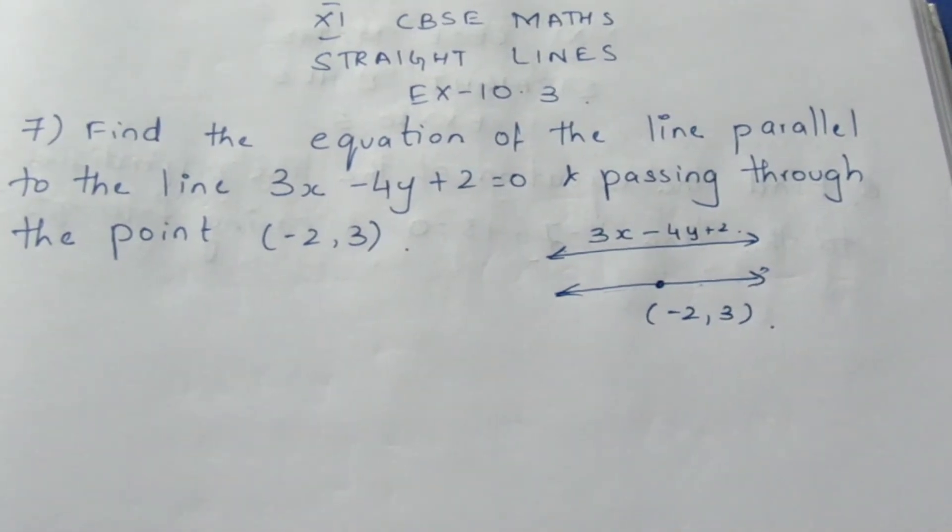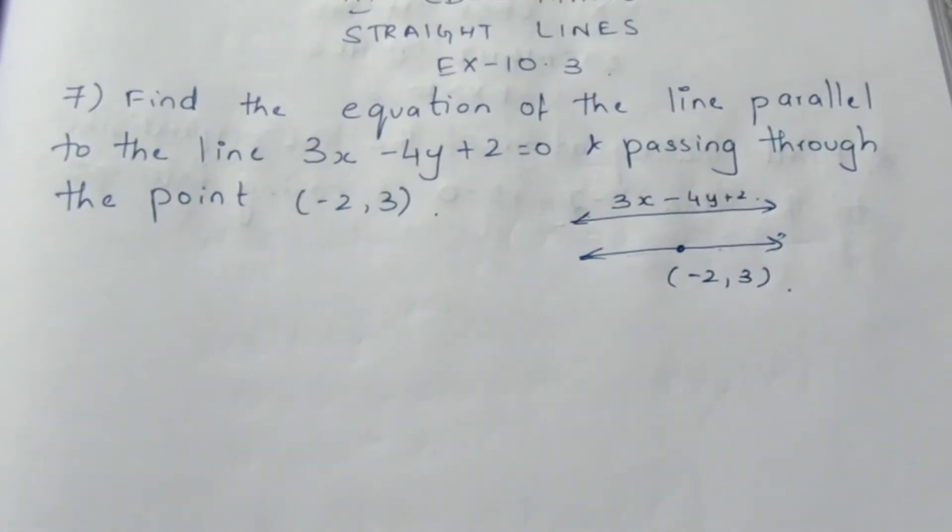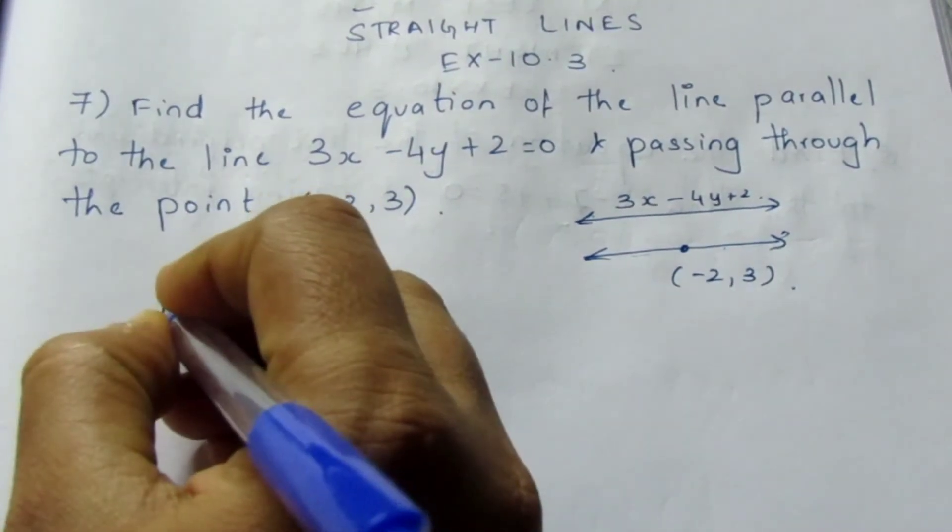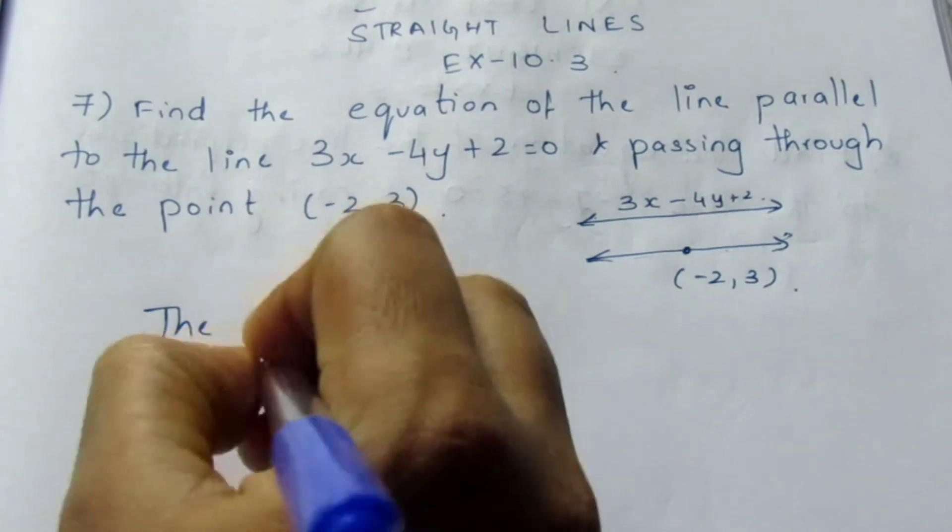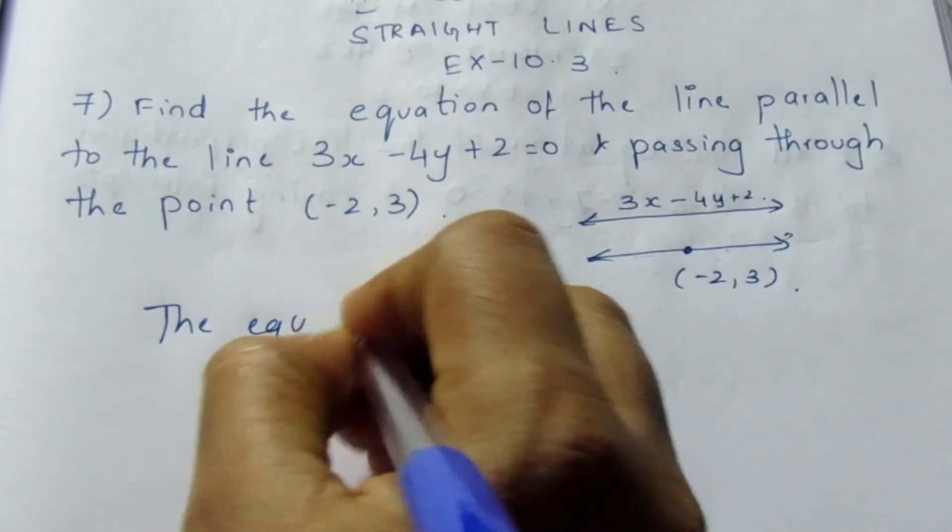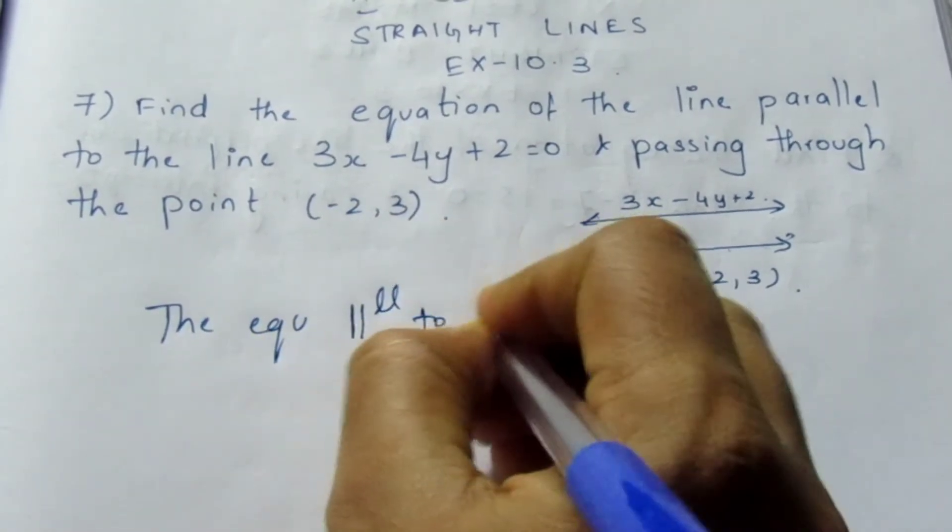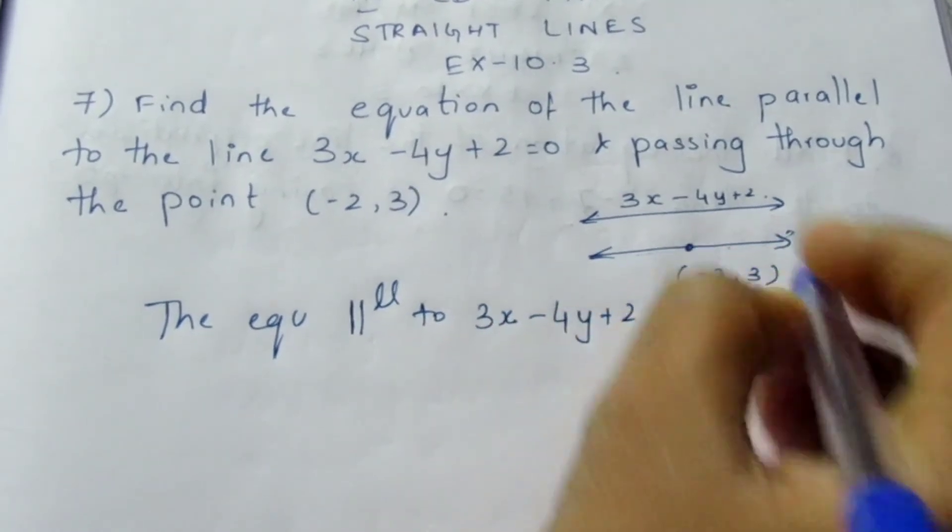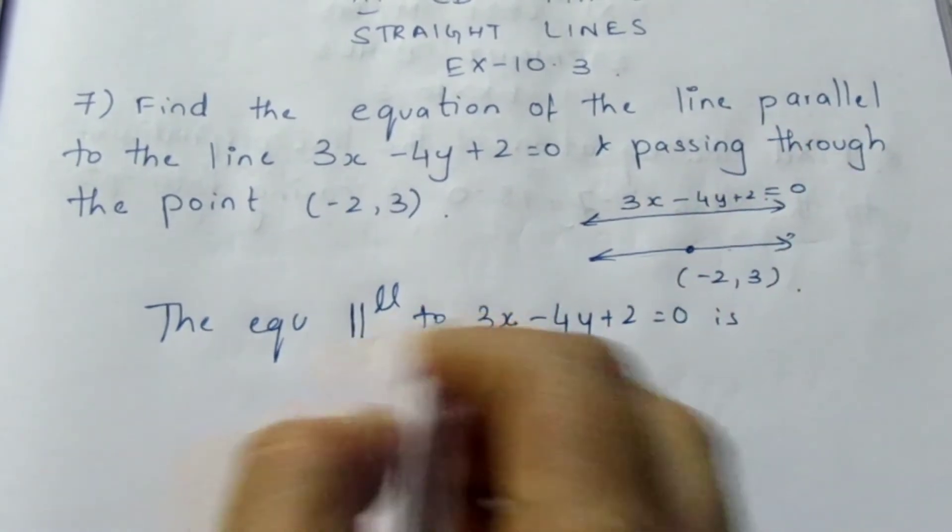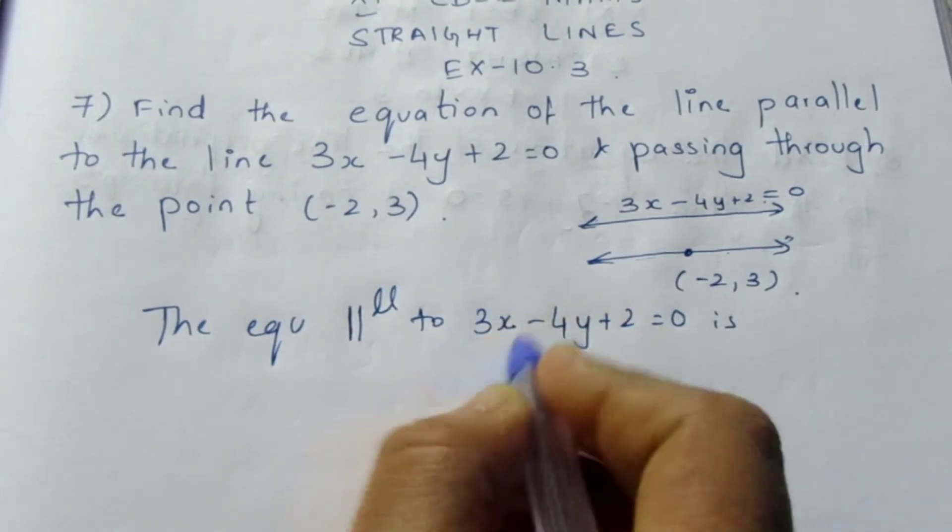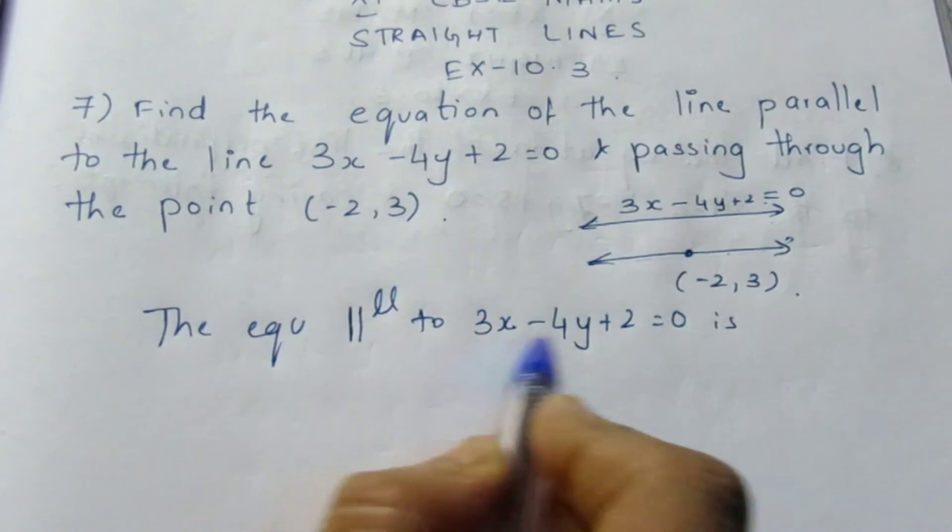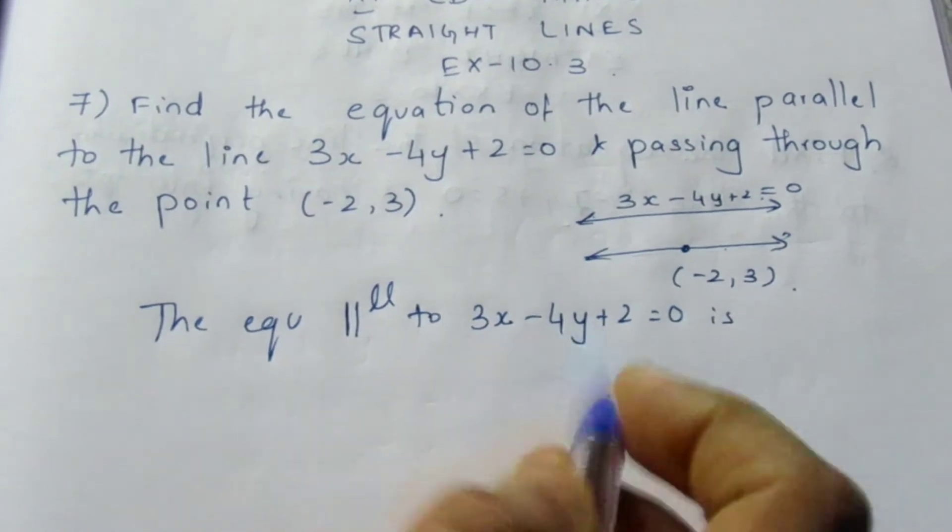Now remember that for an equation parallel to 3x minus 4y plus 2 equal to 0, the x coefficient and the y coefficient will be same. For a parallel line, remember that the x coefficient and the y coefficient will be same.